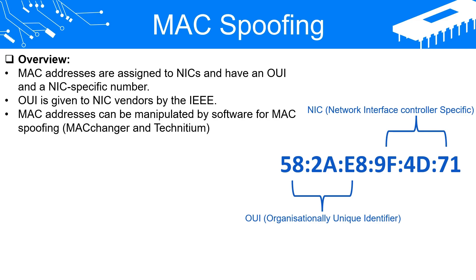Although the MAC address is initially read from the NIC's ROM, it is stored in a software configuration location — like a CFG file in Linux or the registry in Windows — by the Ethernet protocol, which operates in computer memory. By eavesdropping on a network, one can observe the MAC addresses being used, and one of these addresses can be manipulated to gain access to a system by modifying the software copy of the NIC's MAC address.